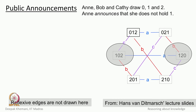Here is another example of a public announcement. Annie has picked up card 0, Bob has card 1, and Kathy has card 2. We had seen the Kripke structure with 6 states where the real state is 0-1-2 for Annie, Bob, and Kathy respectively, along with indistinguishability relations. The moment Annie announces she does not hold card 1, the 2 states beginning with 1 — namely 1-0-2 and 1-2-0 — are removed from the Kripke structure, leaving 4 states and their edges.